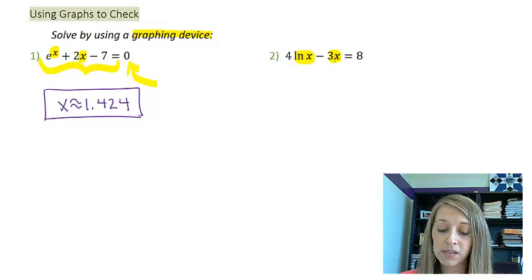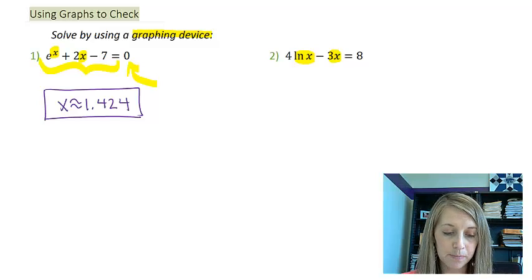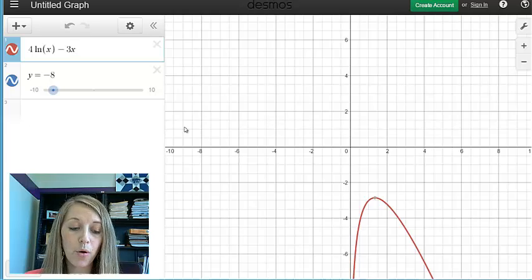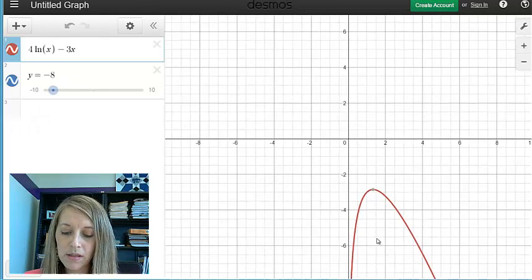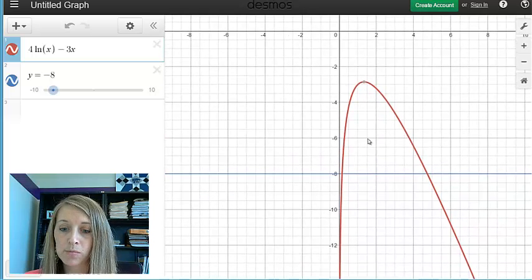And so, on the left-hand side, I plug in 4 natural log of x minus 3x. So, I have both versions of my equations plugged in, 4 natural log of x minus 3x, and y equals negative 8. You might be wondering what's happening here, because I'm not seeing any points of intersection. Well, notice if I'm graphing y equals negative 8, that's a horizontal line at negative 8. Well, I don't see that, so let me just adjust my graph so I do.